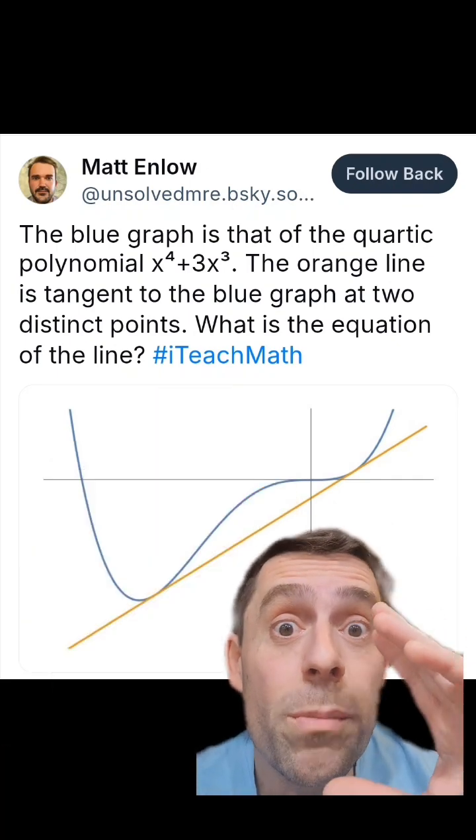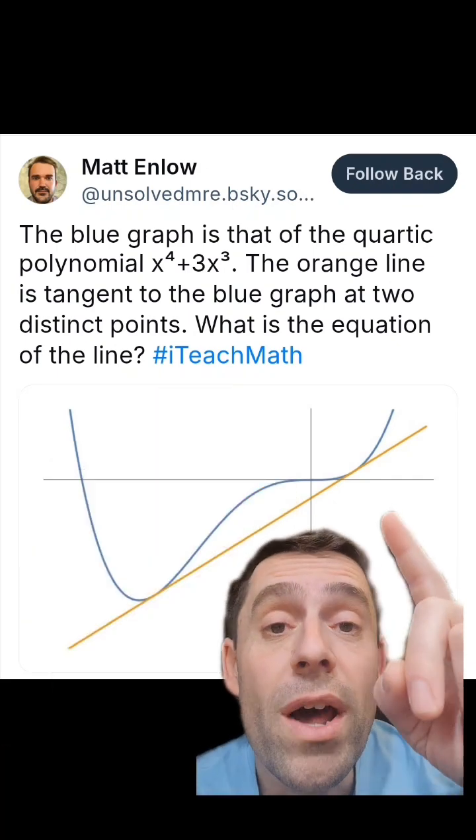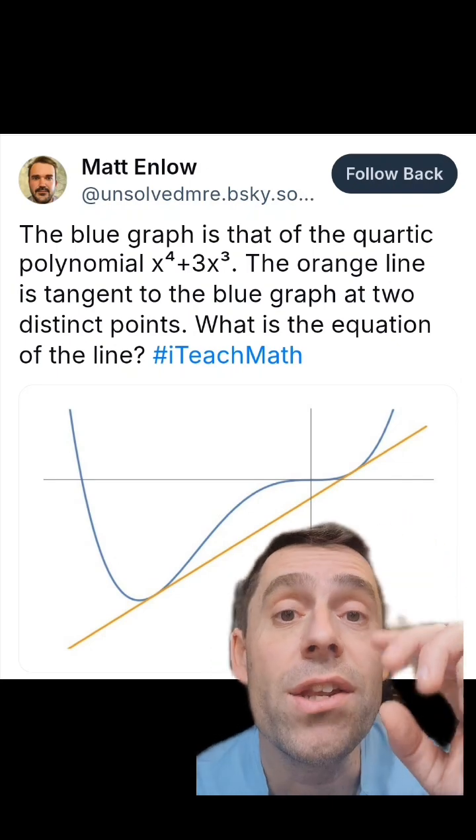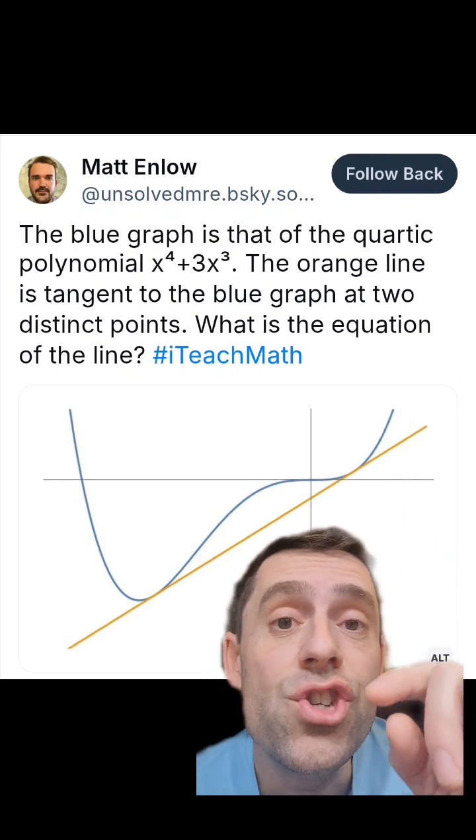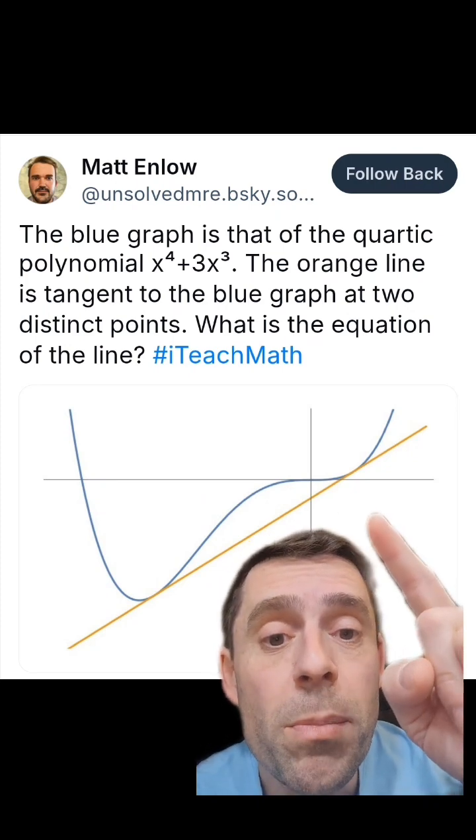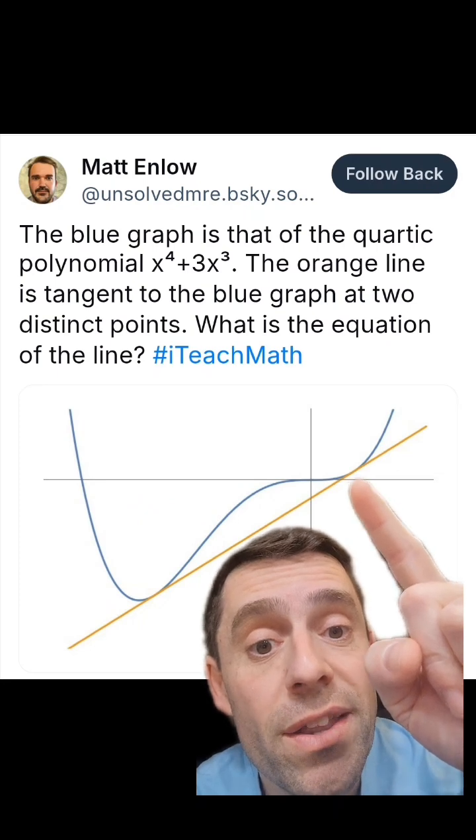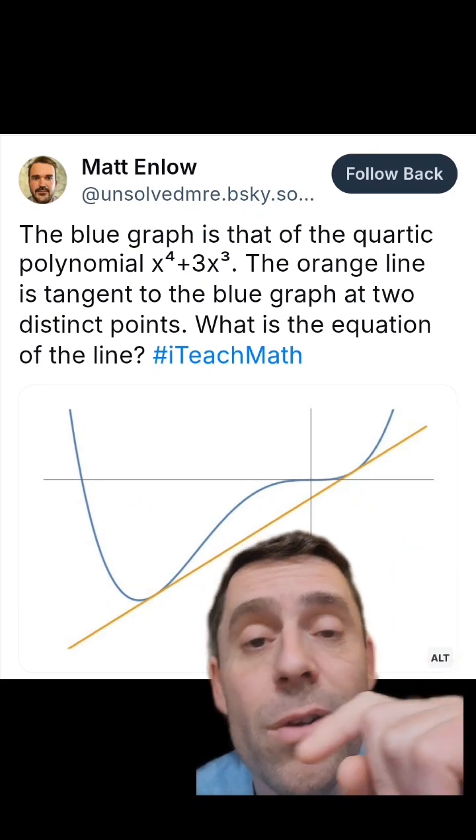Okay, so here's some hint on how to approach the problem. Let's call the graph in blue f and the line g. Then f minus g is still a quartic polynomial, but this quartic polynomial now is going to have a zero here and a zero there.